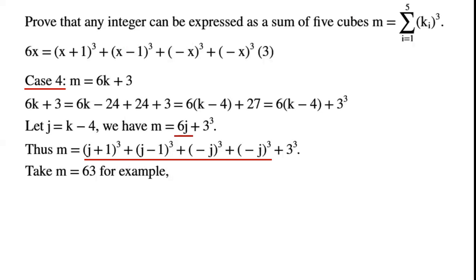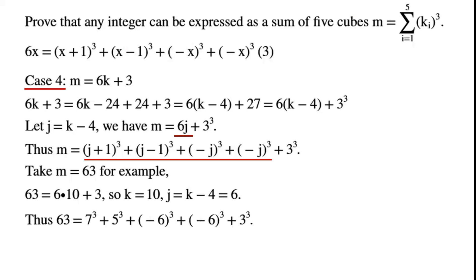Take n equals 63 as an example. 63 can be written as 6 times 10 plus 3, so k equals 10 and j equals k minus 4 equals 6. Thus, 63 can be written as 7 cubed plus 5 cubed plus (-6) cubed plus (-6) cubed plus 3 cubed.